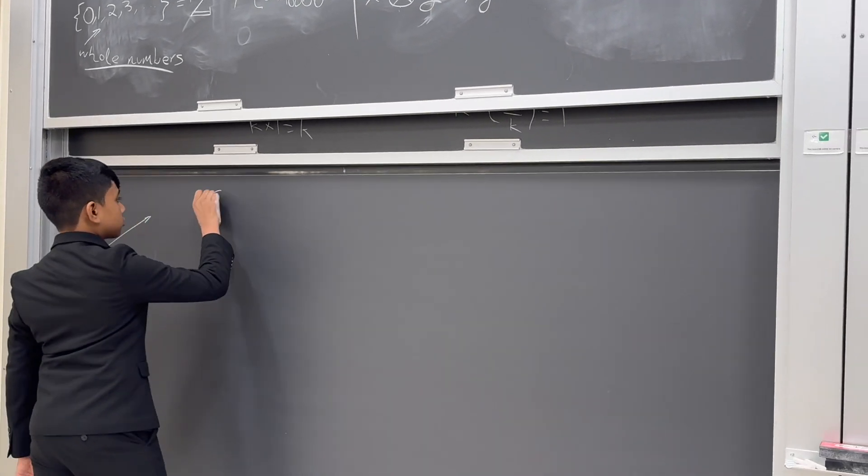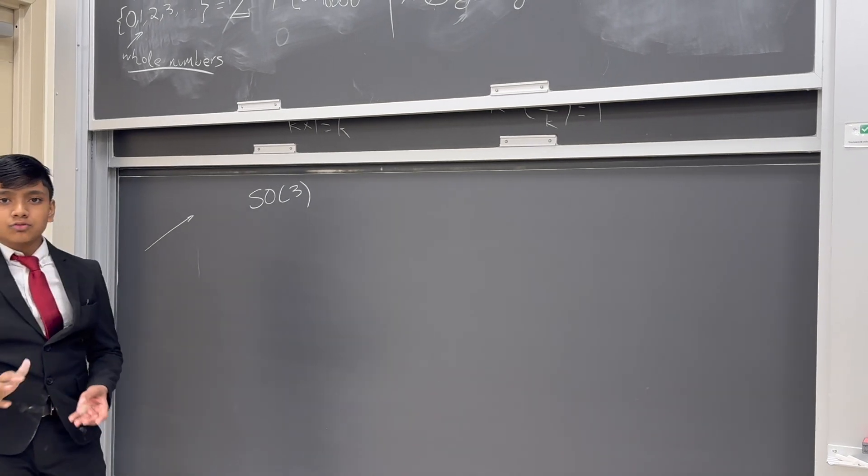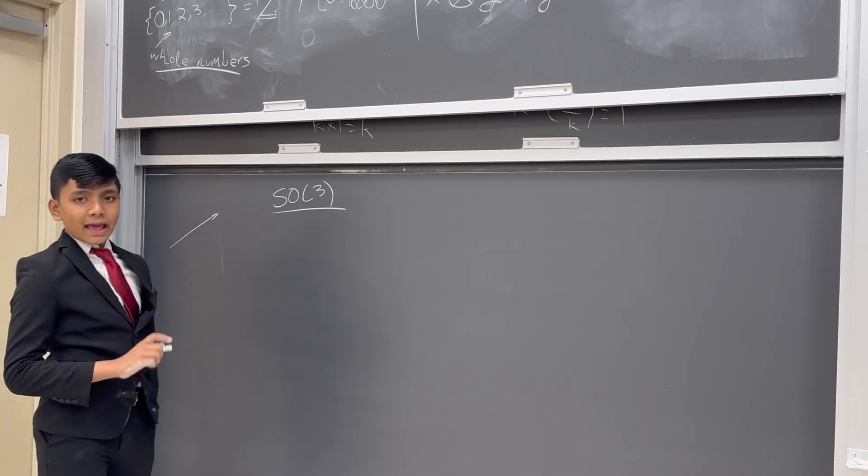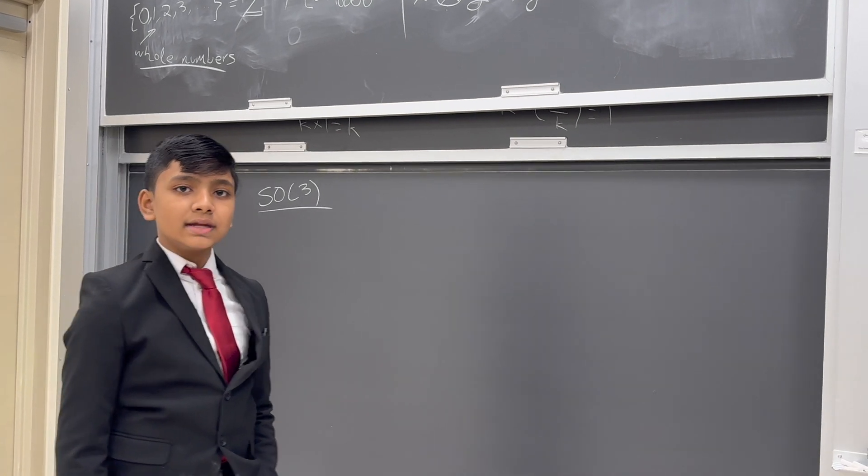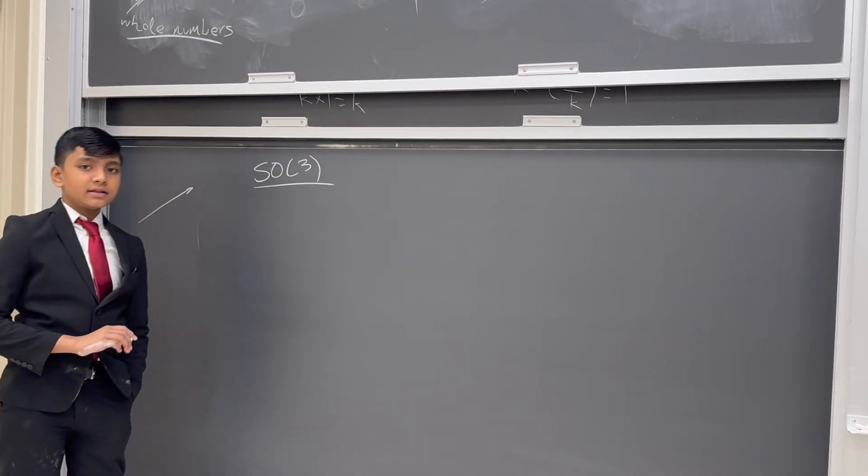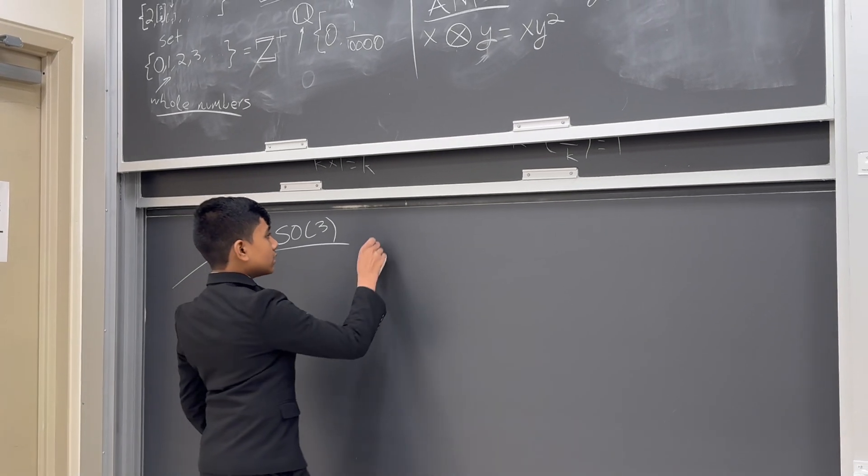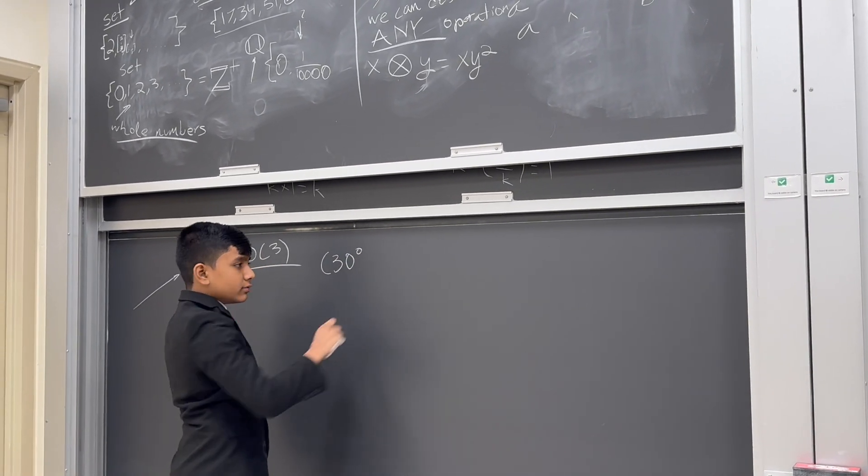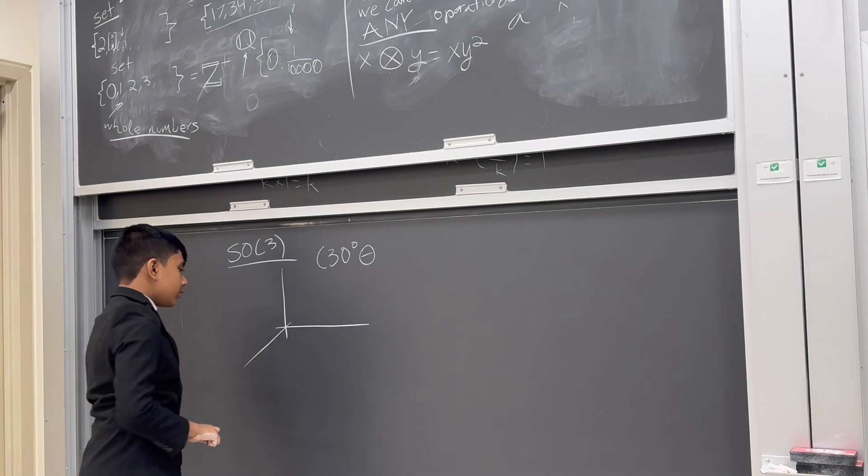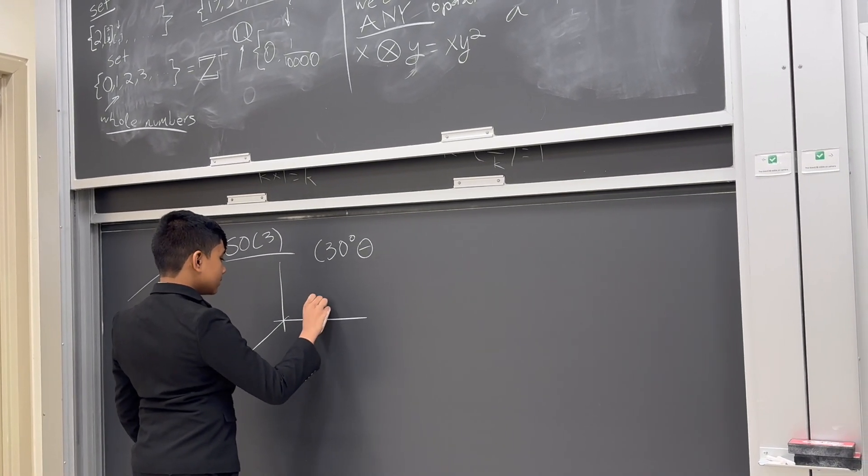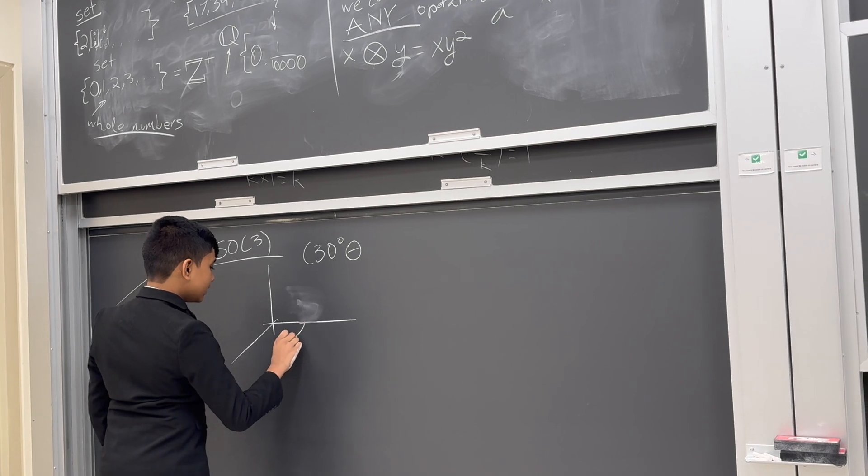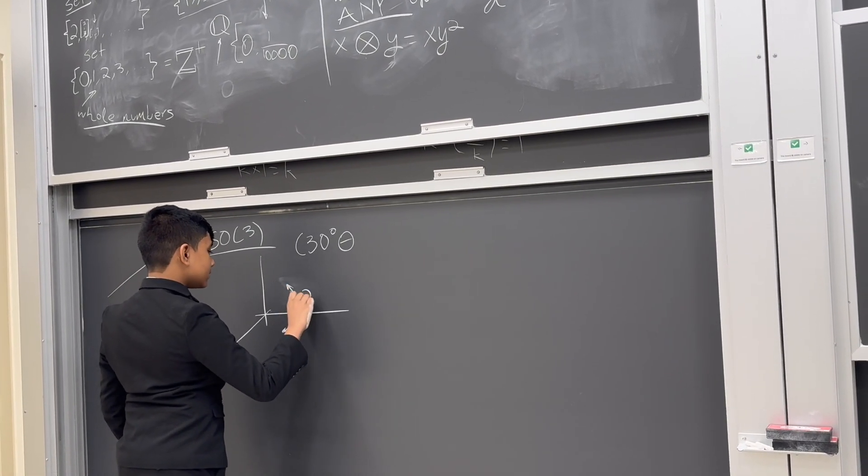Welcome to SO(3). One of the most famous non-abelian groups that's widely used in physics. So, this is simply the set of rotations, every single rotation that you can perform around the origin in three-dimensional space. Now, first of all, this is obviously associative. So, let's say we had a 30 degree rotation around theta. And for reference, I'm pretty sure theta is in this direction, and phi is in this direction.